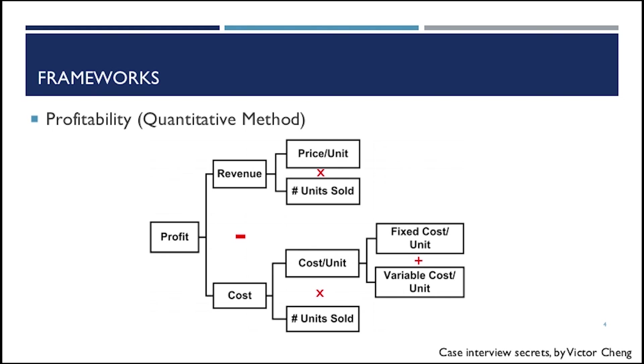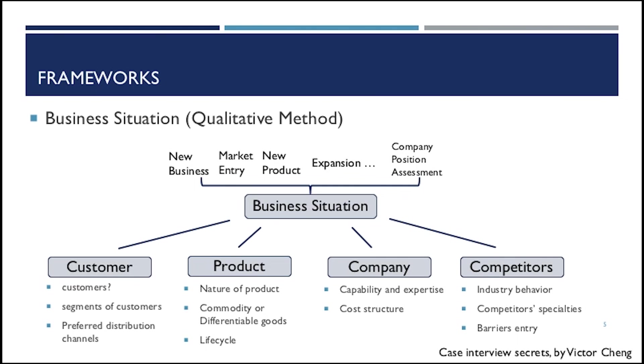And there's another framework in the third lecture we talked about. It is a business situation framework. We have different specific situations, but they are all called business situations. And we have four branches under that: customer, product, company, and competitors. So it is more like a qualitative method. And you ask questions like, why do the customers choose our product? And how does the product work? So it's more on why and how, those qualitative questions.